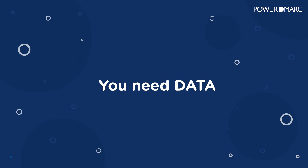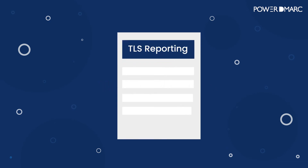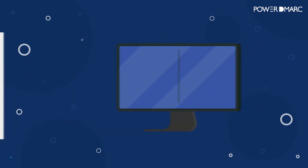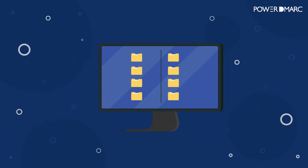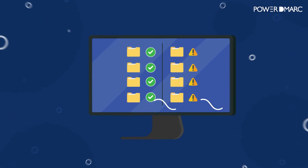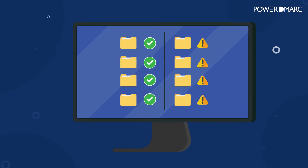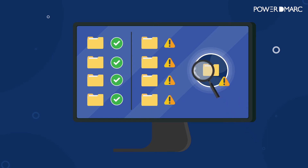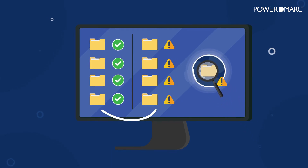For that, you need data, which comes in the form of TLS reporting — your eyes on the inside. TLS reporting gives you daily reports on the status of emails sent to your domain, showing exactly which emails experienced failure of any kind. It lets you see where you're having problems with email delivery, so you have all the data you need to fix the issue.